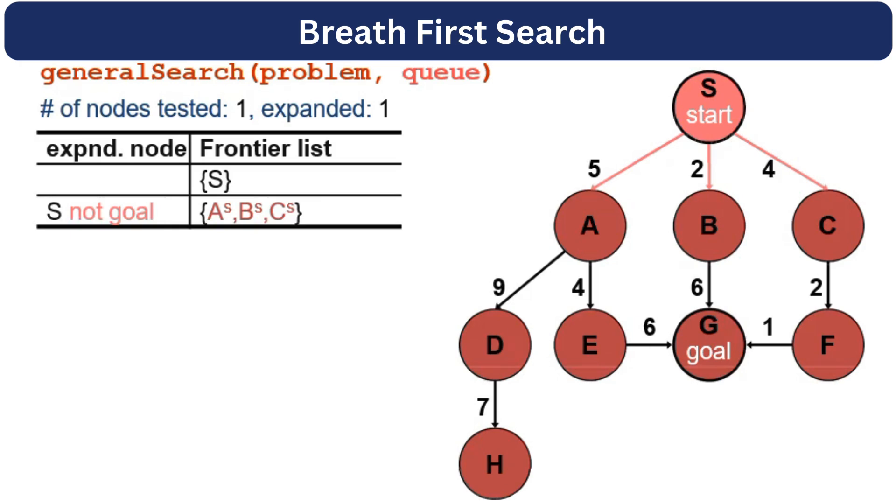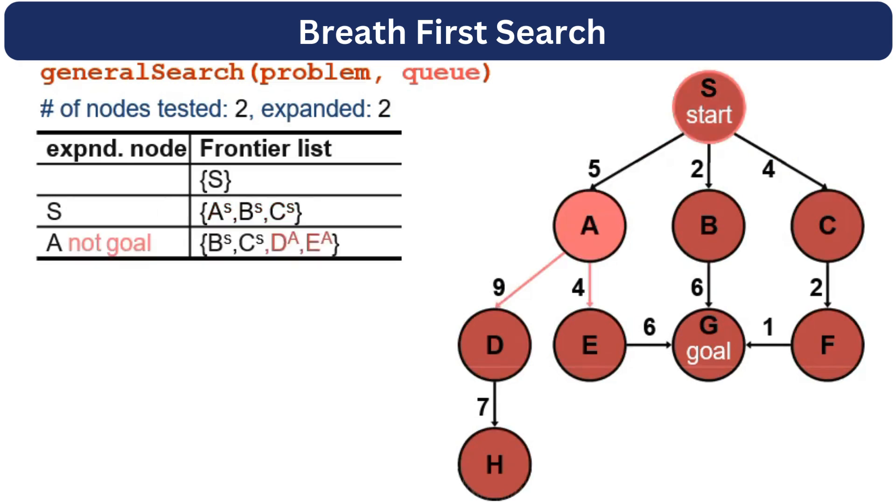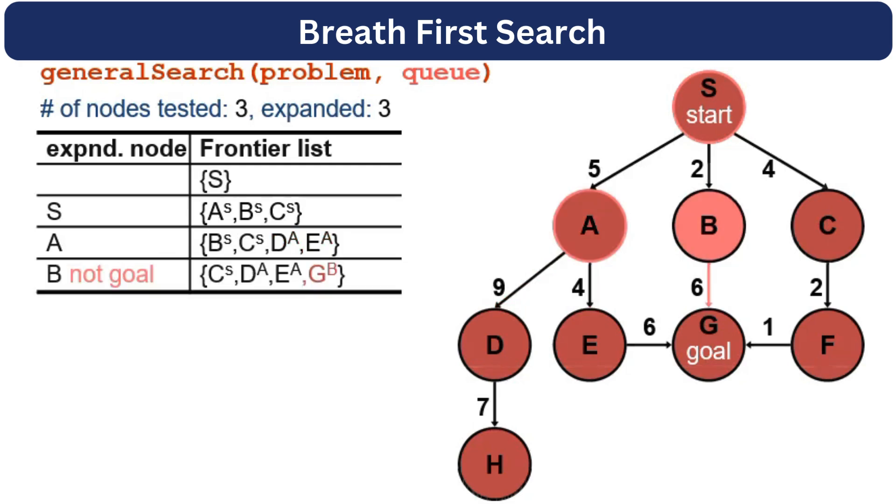We will check if S is the goal node. S is not a goal node, so we will expand the next node in our queue, which is A. After expanding A, we will get D and E and append them at the end of the queue. We will mark A as visited. Since A is not the goal, we will proceed further and explore the next node, B, and we will get G. Please note that we haven't reached the goal yet. The G node is in the queue. We will mark B as visited. B is not the goal.